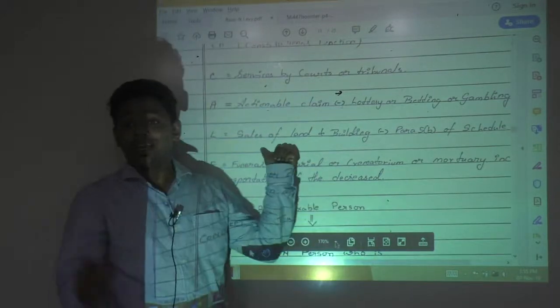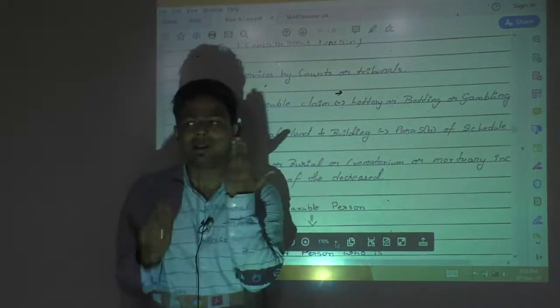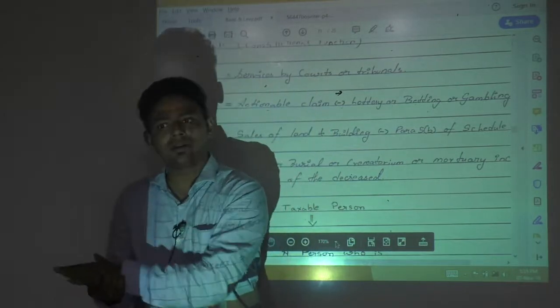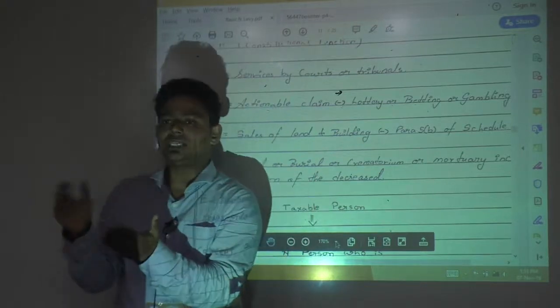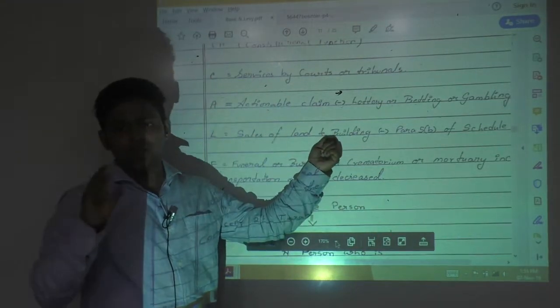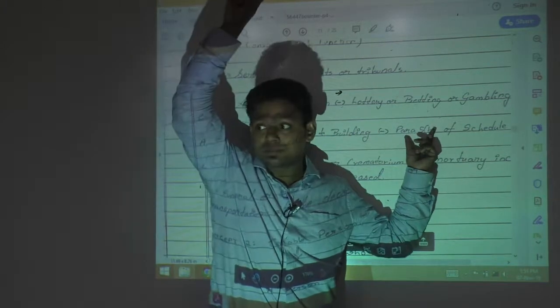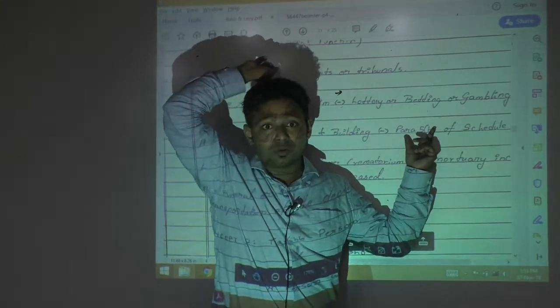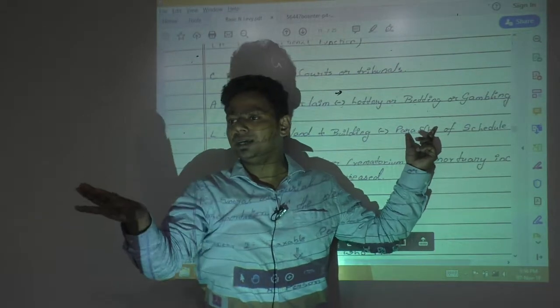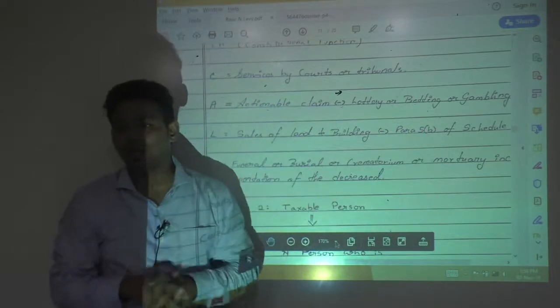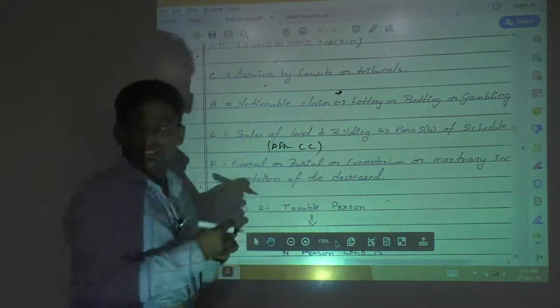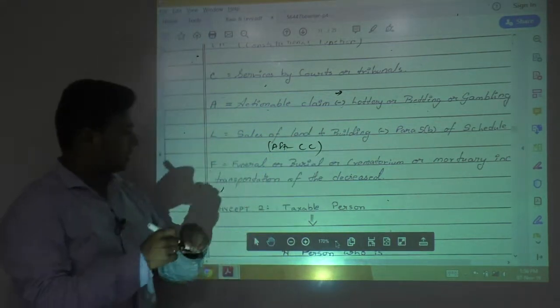Sale of land and building is not taxable. Here also it came. Sale of land and building is not taxable. Just now I told you sale of land and building is taxable. But when is it taxable? Before CC it is taxable. So what I have written here sale of land and building is not taxable, but if it is covered by para 5B of schedule 2, that means before completion of CC, then it is taxable. So after CC it is not taxable. If you want you can write here it is after CC.